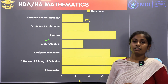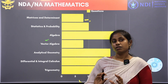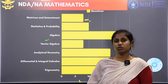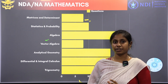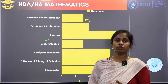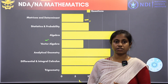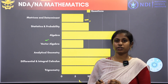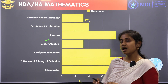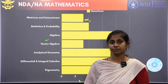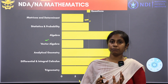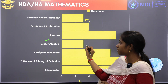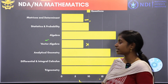Vector algebra is a more complicated chapter — it is a little complicated, but it is the easiest chapter for mathematical background students. For non-mathematical background students, it is a little tougher. The weightage is also a little less, so if you just want to clear the exam, the vector algebra chapter is not strictly necessary.